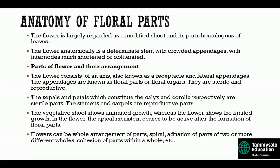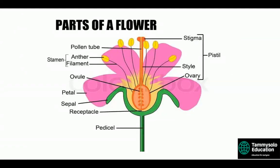Flowers can have a whole arrangement of parts — spiral alternation, parts in two or more whorls, cohesion of parts within a whorl, and so on. Looking at the parts of a flower in diagram format: we have the stigma, style, and ovary — this entire structure is called a pistil — while the anther and filament together are called the stamen. These are the reproductive parts. The petal, sepal, and receptacle are also present, along with the pedicel, the stalk connecting the flower to the plant.